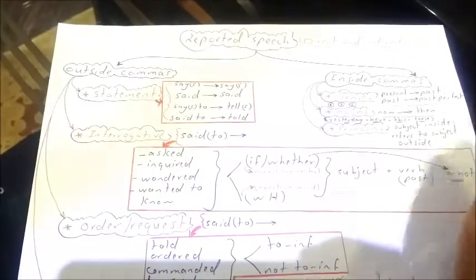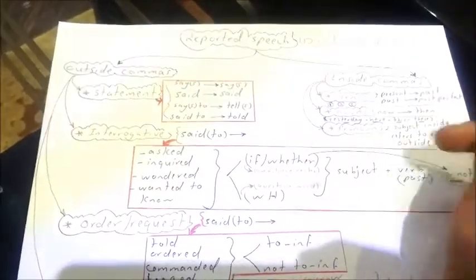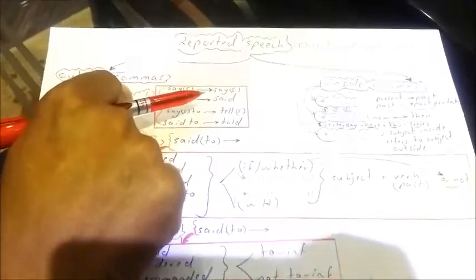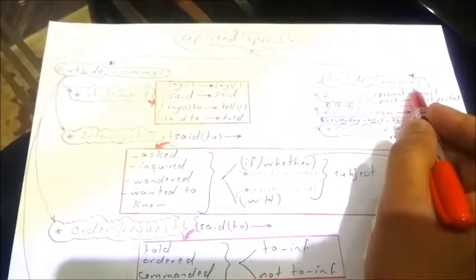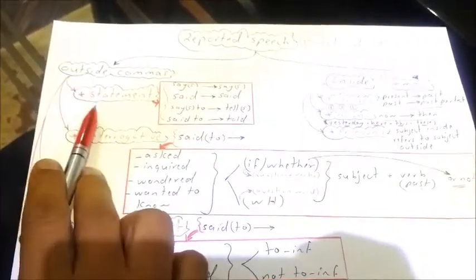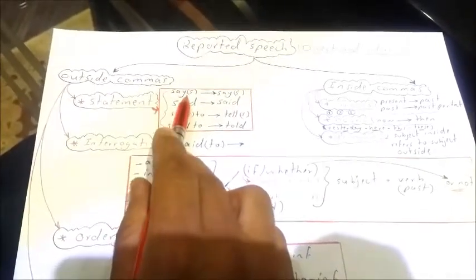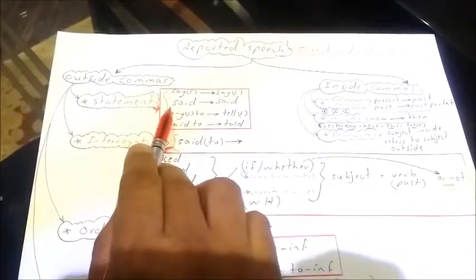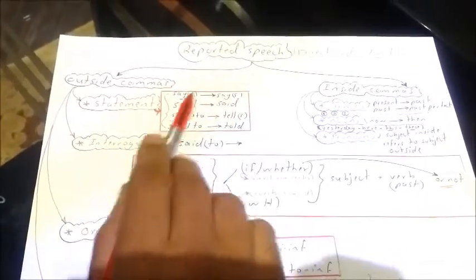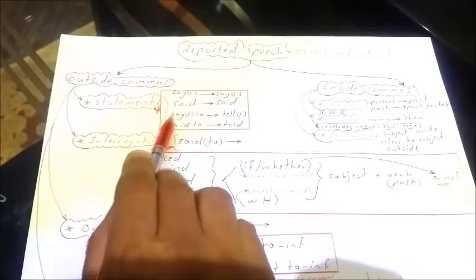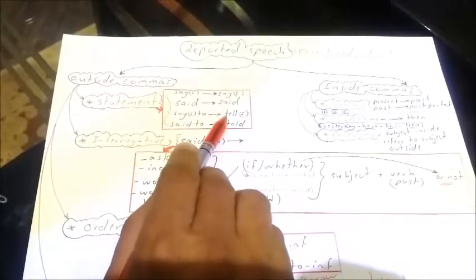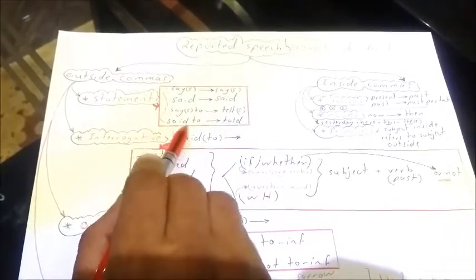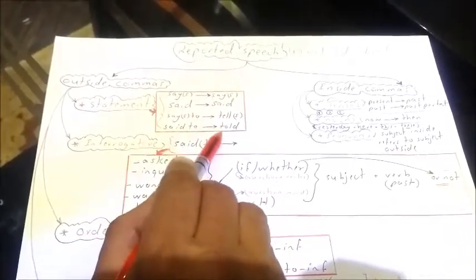Outside the comma, for a statement: if we have 'say' or 'says', it remains as it is. 'Said' also remains as it is. 'Say to' or 'says to' becomes 'tell' or 'tells', and 'said to' becomes 'told'.